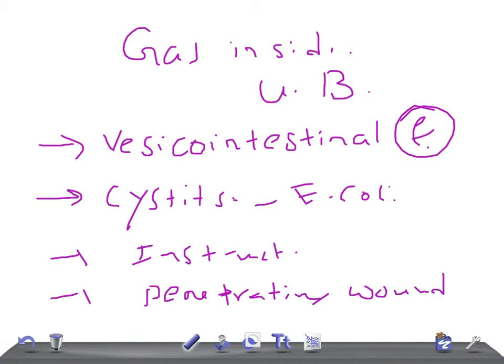So if you see gas in the bladder wall, then it is emphysematous cystitis and usually seen in diabetes. Remember, gas in the bladder wall - if you see that, then it could be due to emphysematous cystitis. Okay guys, thank you so much for watching this video, take care.